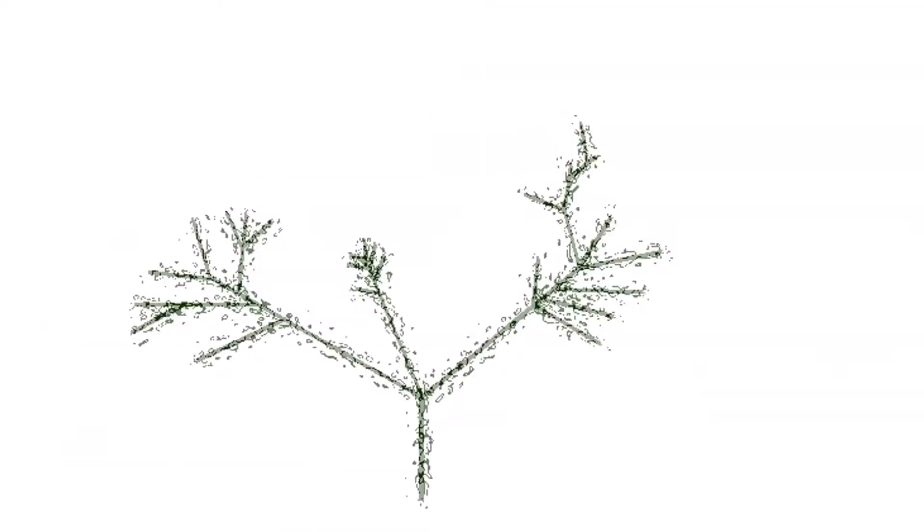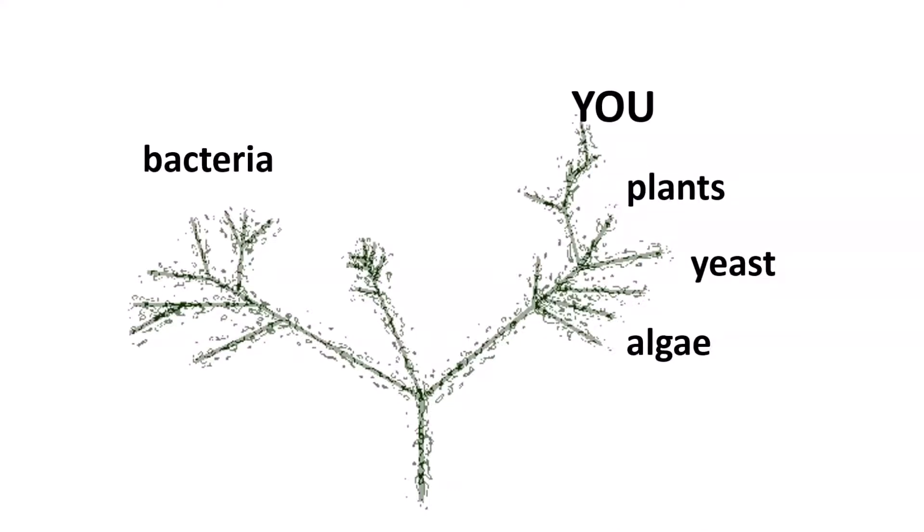This is the tree of life. Branches on the tree of life represent different life forms, such as bacteria, algae, yeast, plants, bugs and critters, and you. So, where is virus? It is not part of the tree.